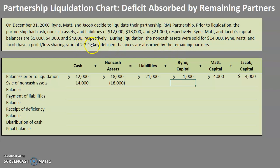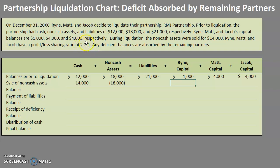Any gains or losses from the sale of non-cash assets are distributed according to the profit-loss sharing ratio. Since it's a 2 to 2 to 1 ratio, there are 5 parts total — Ryan gets 2 fifths of the loss, Matt gets 2 fifths, and Jacob gets 1 fifth. Whenever you're figuring out how much gain or loss each partner absorbs, turn it into a fraction and count up all the parts.